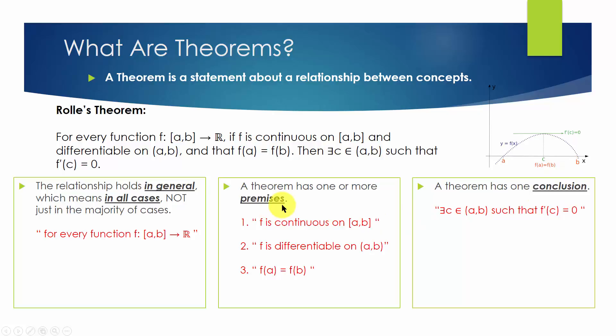In Rolle's theorem, there are three premises which are three conditions that must be met. The first premise is that the function f must be continuous on its domain, which is the closed interval from a to b. The second premise is that the function f must be differentiable on the open interval a to b.